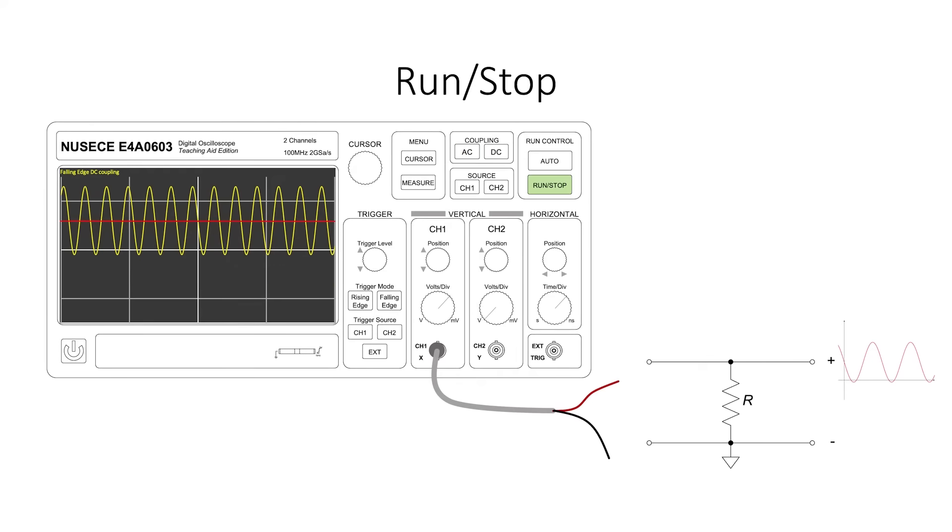Another important setting found on many oscilloscopes is the stop or run button. Sometimes a signal might be changing very rapidly and you want to stop it in order to get some useful measurements from it. Just hit the stop button and then often a cursor will appear. You can move the cursor around or measure things like frequency and voltage once the signal has stopped.